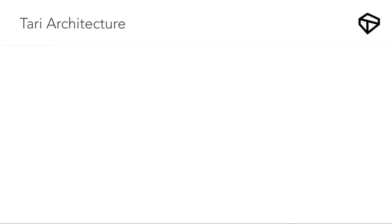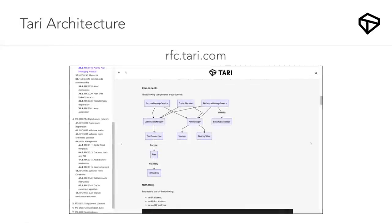Where we are today: we have an RFC — a set of standards for Tari — which is coming together nicely. You can look at them at rfc.tari.com. There's actual code being written at github.com/tari-project — you can't quite compile it yet, but there's scaffolding and code. More people are getting interested in Tari daily and learning Rust, which is challenging, but as they cut their teeth they become more adept and start to contribute.